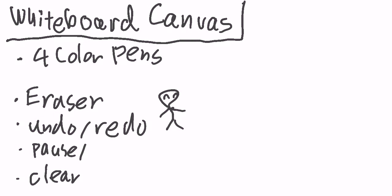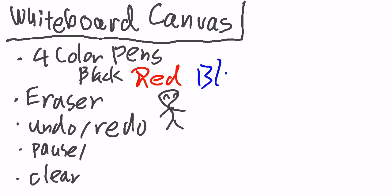Let me introduce you to the basic features of Whiteboard Cast. First, four color pens: black, red, blue, and green.